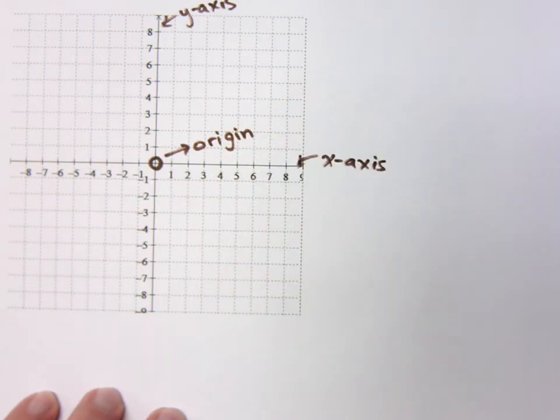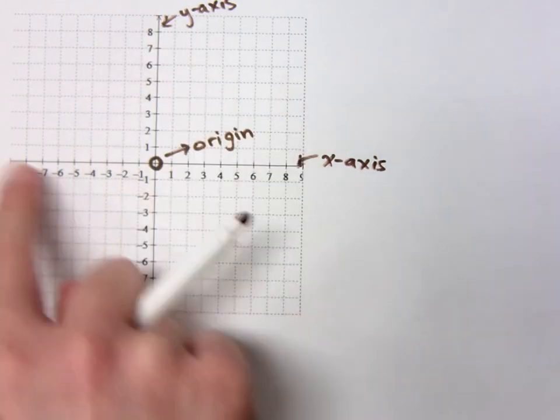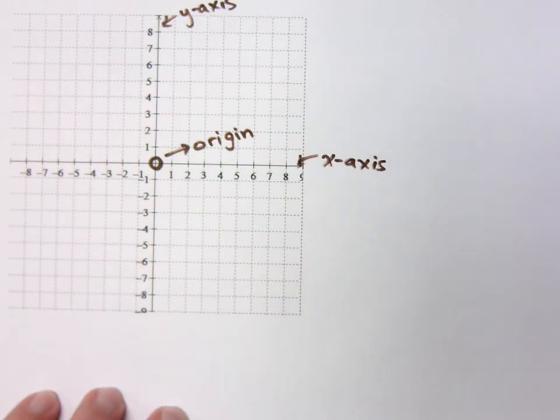Alright. And when we look at this, we see that these number lines divide up this plane into how many sections? Four. Four quadrants, right?